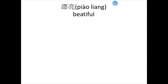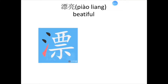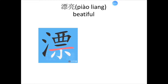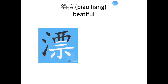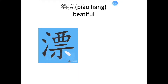Now let's see how to write 漂亮. We should finish the left part first and then finish the right part. Stroke count for 漂: 1, 2, 3, 4, 5, 6, 7, 8, 9, 10, 11, 12, 13, 14.